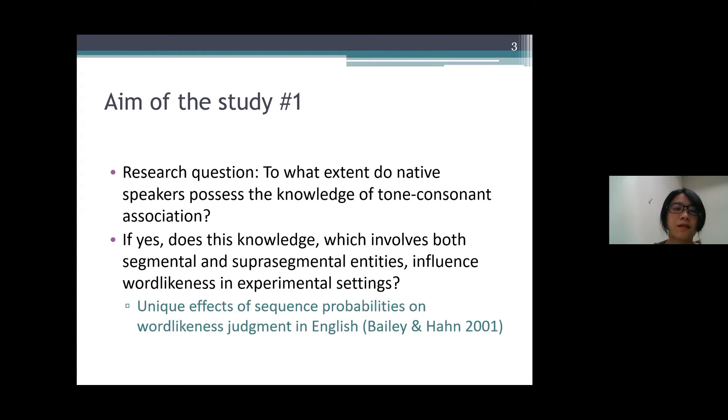The first aim of this study is to explore to what extent do native speakers possess the knowledge of tone-consonant association. And if they do, does this knowledge, which involves both segmental and suprasegmental entities, influence word-likeness in experimental settings? Past research has found unique effects of sequence probabilities of segments on word-likeness judgment of both pseudowords and real words in English, such as the results reported in Bailey and Hahn in 2001. By the same token, we wonder if the tone-consonant association in Mandarin also influences speakers' judgment in a similar fashion.